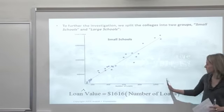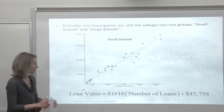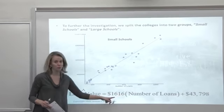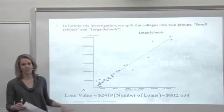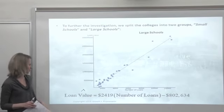The other thing that's kind of interesting, you can kind of interpret the slopes for your two equations. As the number of loans increases for the small schools, see the impact on the loan value. And then what happens at the big schools on the loan value. So that's kind of interesting, you might have a conversation about that in class.